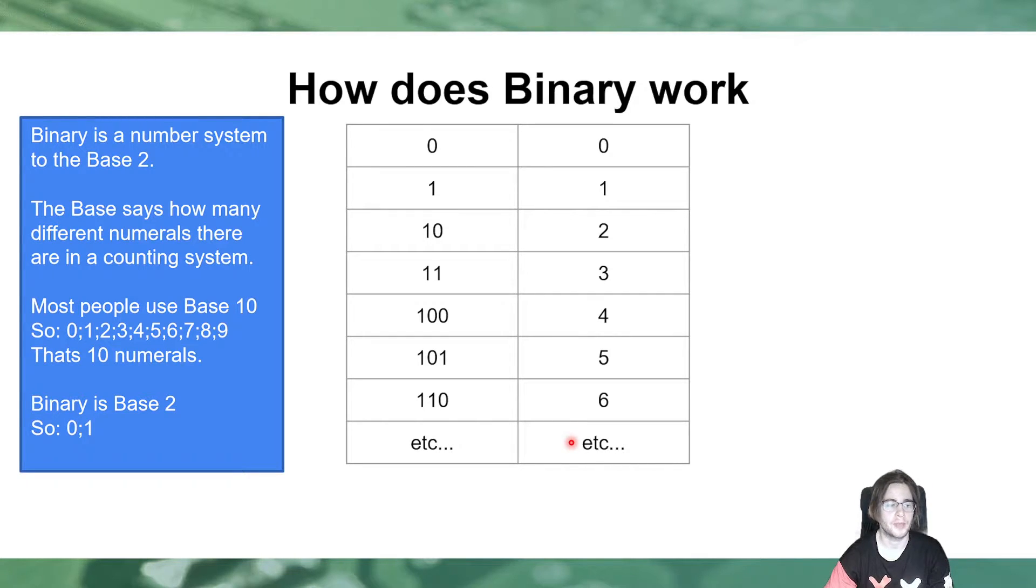First, how does binary work? It is a number system to base 2. The base says how many different numerals we have, so how many different states. We have base 10. As humans, most languages work with base 10. That's just 0, 1, 2, 3, 4, 5, 6, 7, 8, 9. That's 10 different type of numbers you have until you jump to the next digit. The 0 is also counted, that's why 10.